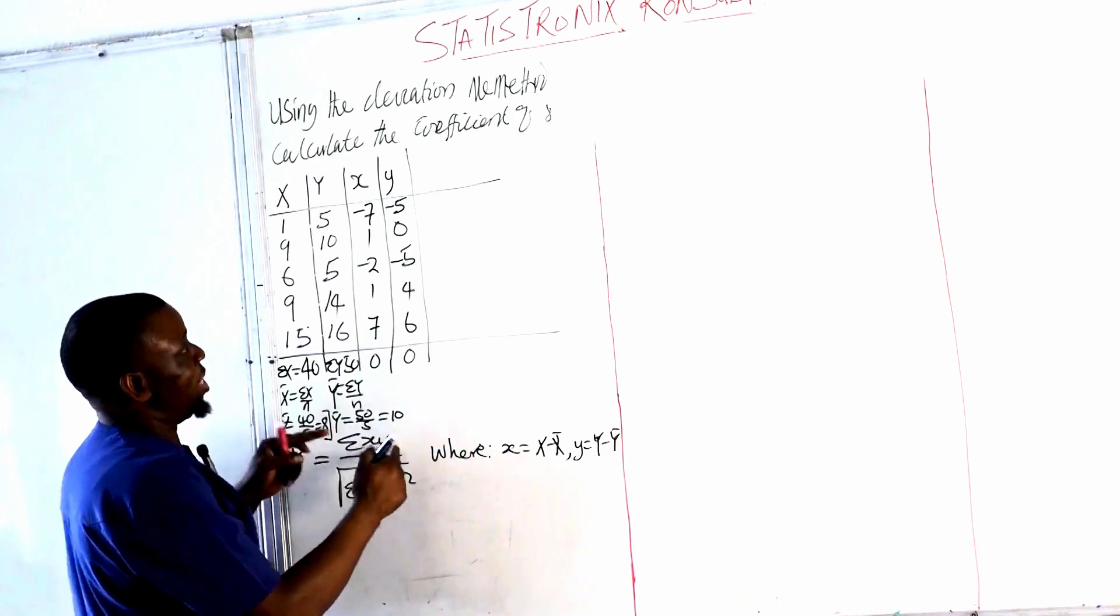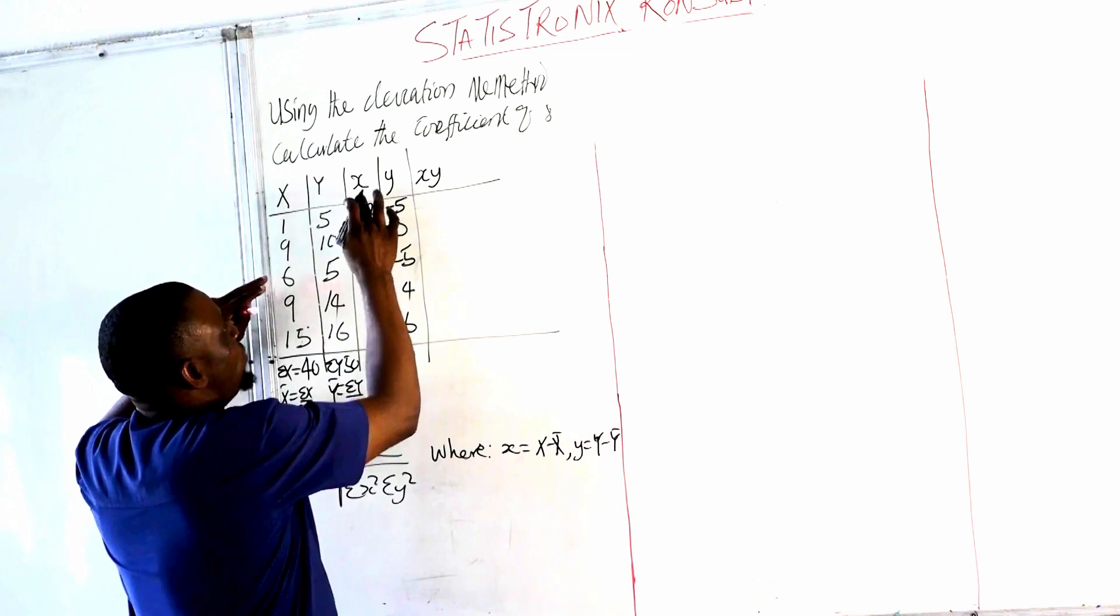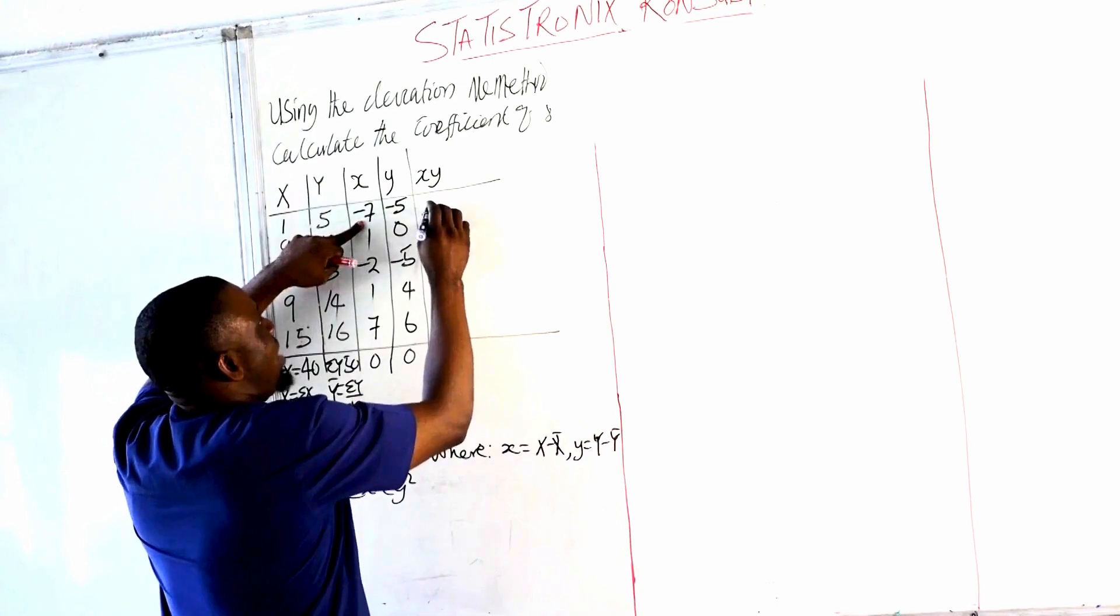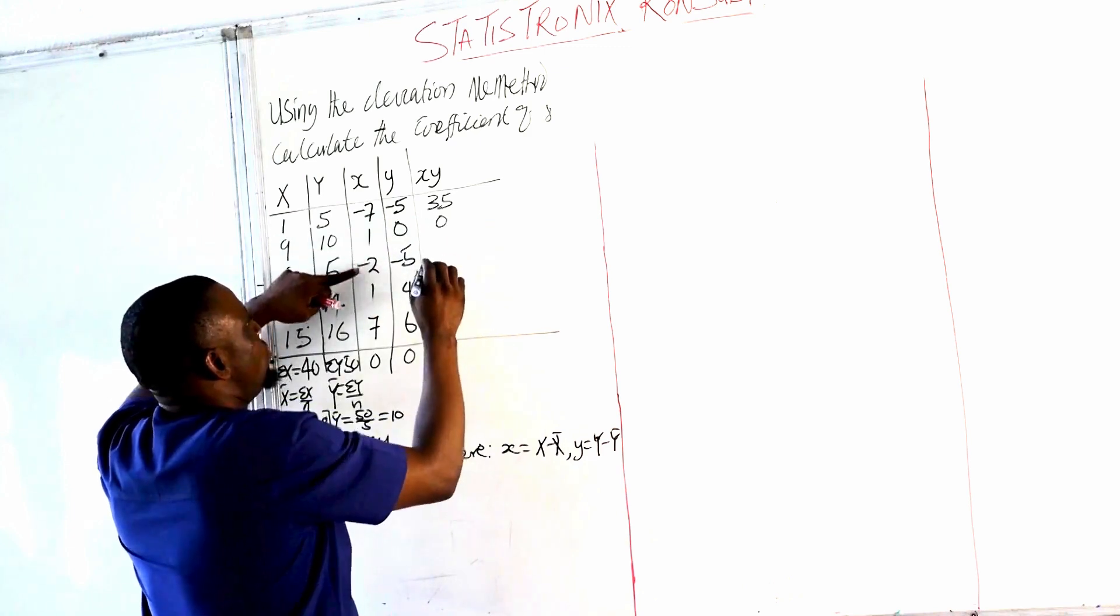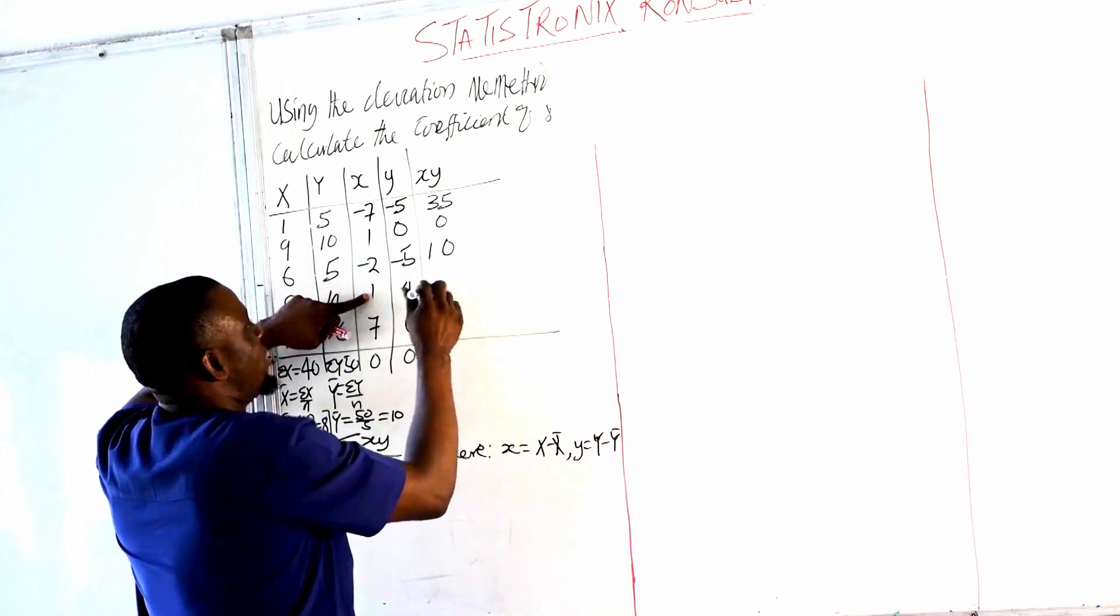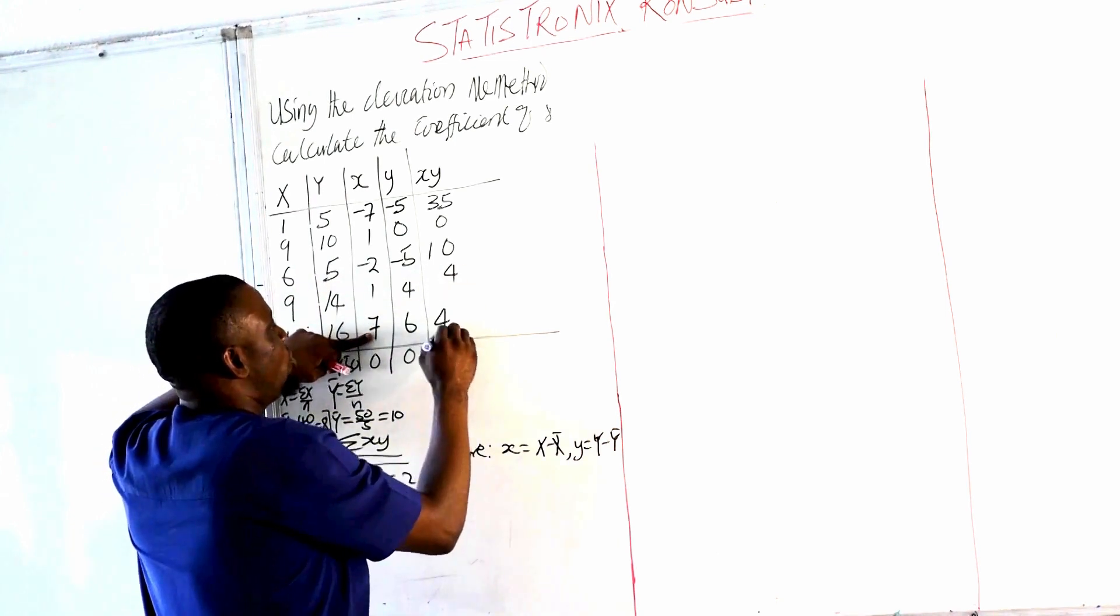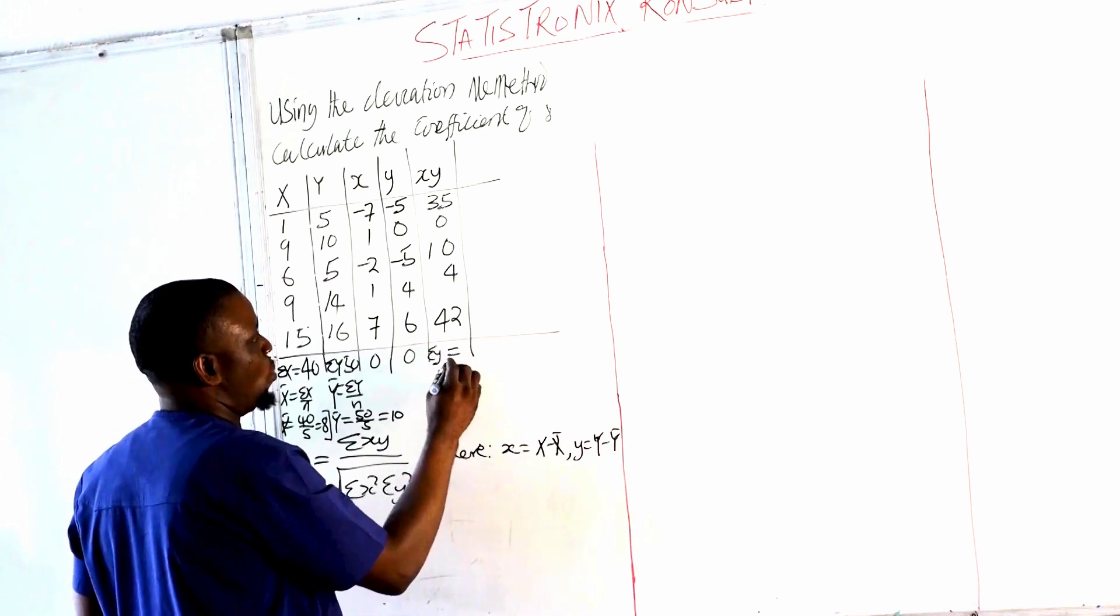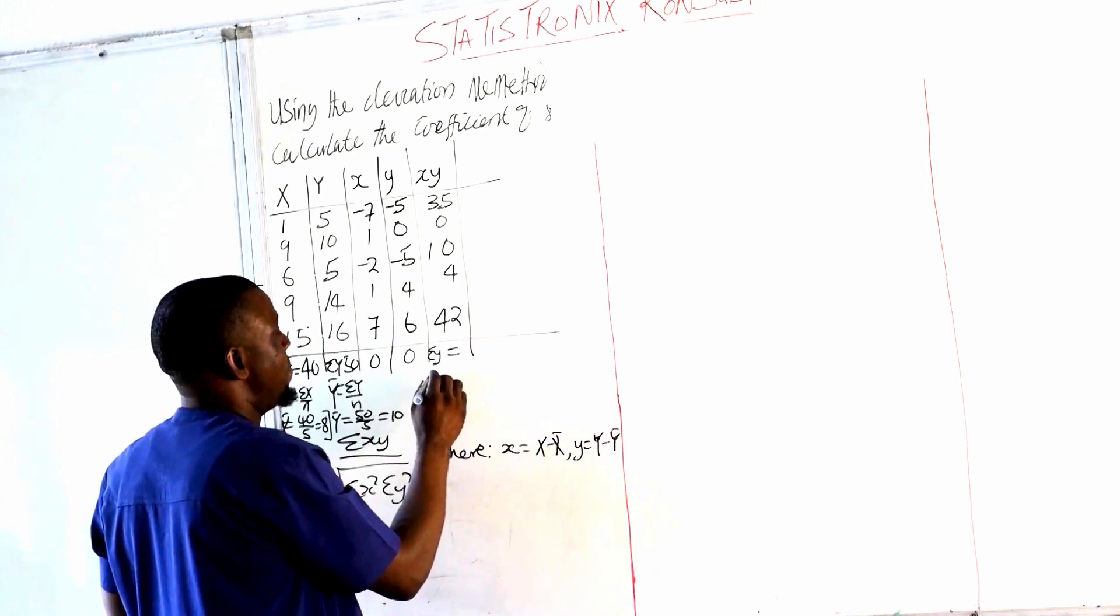So from the formula we have XY, so we'll create a column and call it XY. So XY will be multiplying the values of x times y. So minus 7 times minus 5 will be 35, 1 times 0 will be 0, minus 2 times minus 5 will be plus 10, and then 1 times 4 will be 4, 7 times 6 will be 42. So if we sum this for our summation of XY, it will be equal to 91.